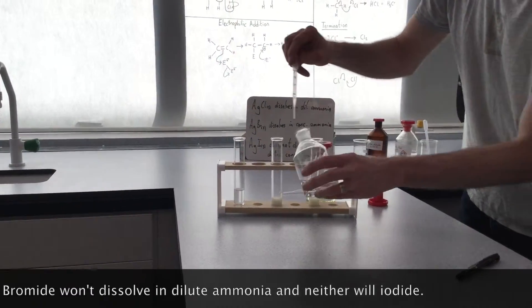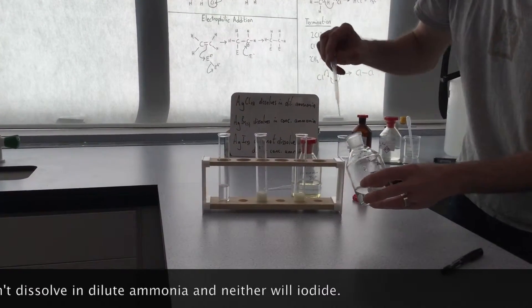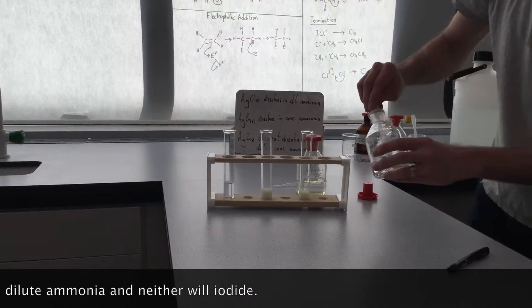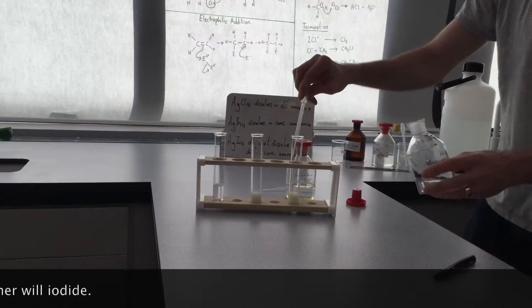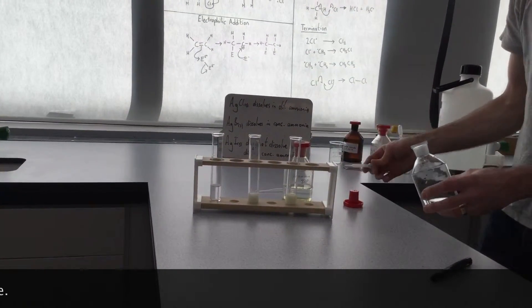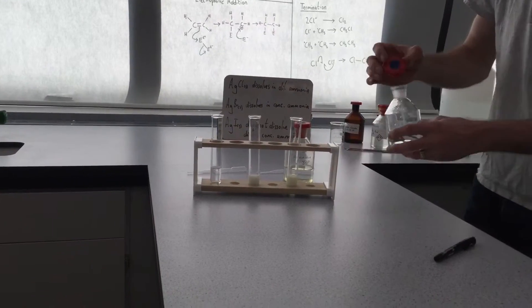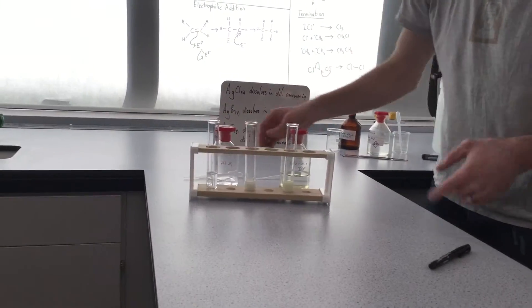The bromide doesn't redissolve in dilute ammonia. And the iodide also doesn't redissolve in dilute ammonia. So we've still got a problem because we need to tell the difference between the bromide and the iodide.